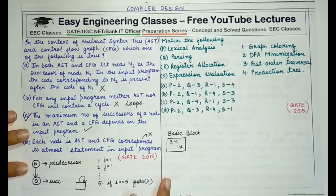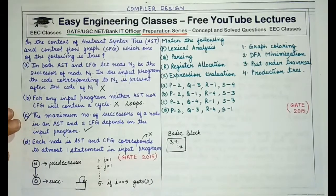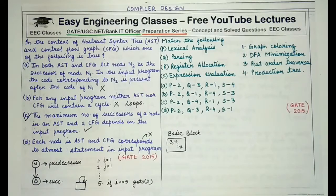Now coming to the second question, we have to match the following columns. The options in the first column are lexical analysis, parsing, register allocation, and expression evaluation. And in the second column, the options given are graph coloring, DFA minimization, post-order traversal, and production tree. So this is not at all a difficult question.